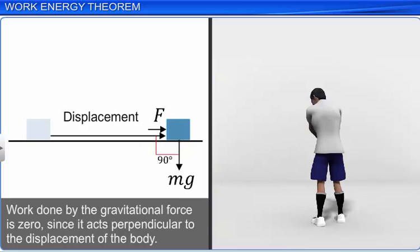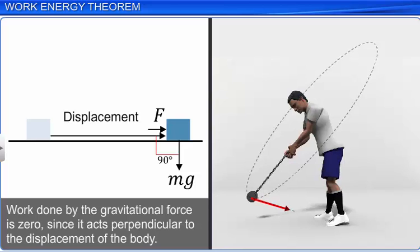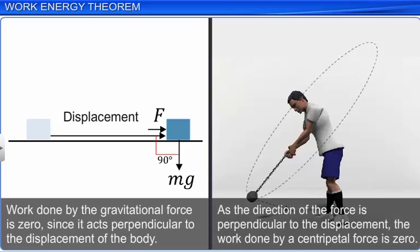The work done by a force is zero when the force is perpendicular to the displacement. Consider a block moved over a horizontal surface — the displacement is horizontal, whereas the gravitational force acts vertically downwards, so work done by gravity is zero. As another example, consider a stone tied to a string and whirled in a circular path. A centripetal force acts on the stone directed towards the center, while the displacement is along the tangent, so the work done by centripetal force is zero.